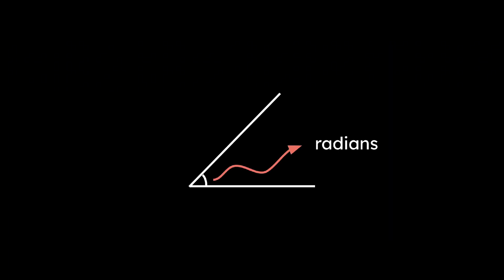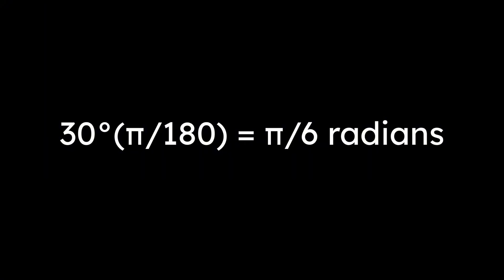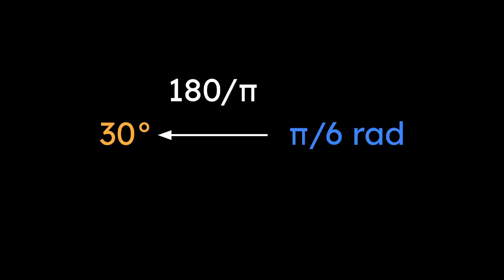Because degrees are a pretty dogwater unit for everything, people measure angles in a unit called radians instead of degrees. The conversion factor between degrees and radians is pi over 180. So if you have 30 degrees and you wanted to convert it into radians, you would multiply 30 by pi over 180, giving pi over 6 radians. To go the other way, multiply by the reciprocal 180 over pi.